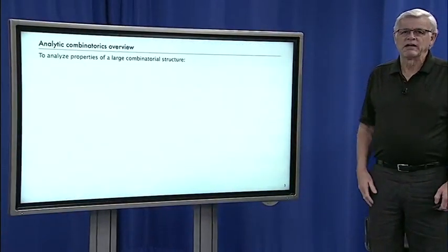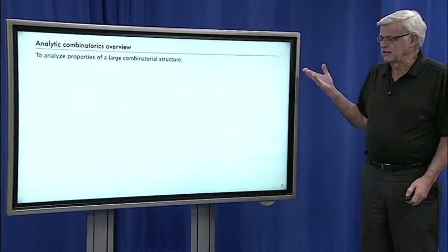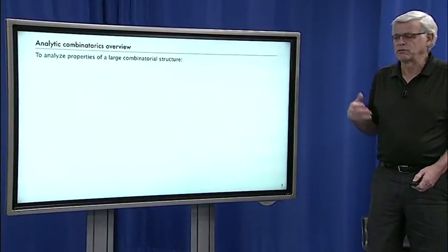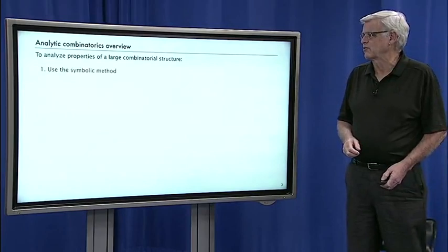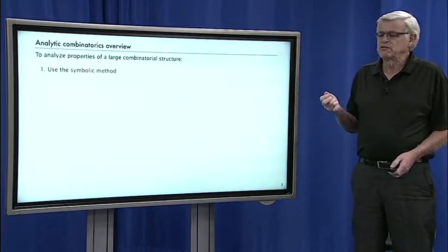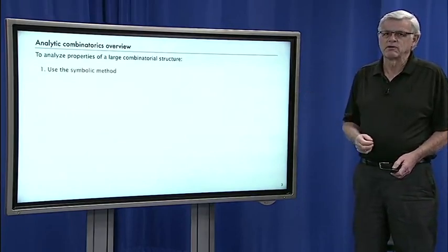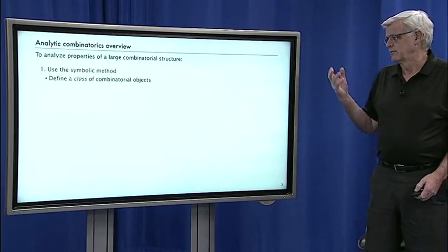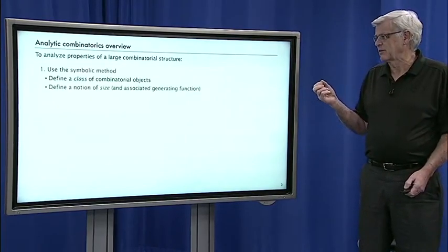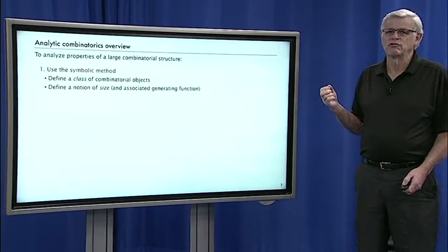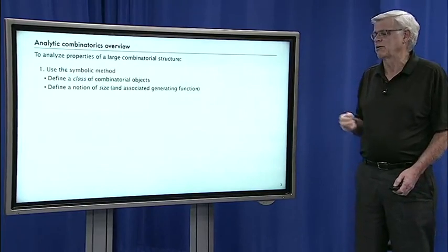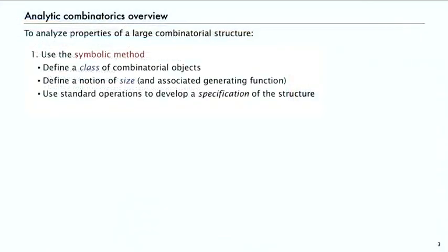So a quick overview of what analytic combinatorics is. It's a calculus for analyzing properties of large combinatorial structures. What we do is use the symbolic method to define a class of combinatorial objects along with a notion of size and an associated generating function. Then we use standard operations or combinatorial constructions to develop a specification of the structure.